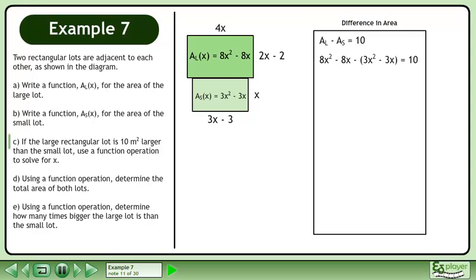Replace the area of the large rectangle with 8x²-8x and replace the area of the small rectangle with 3x²-3x. Distribute negative 1 through the brackets. Collect like terms.